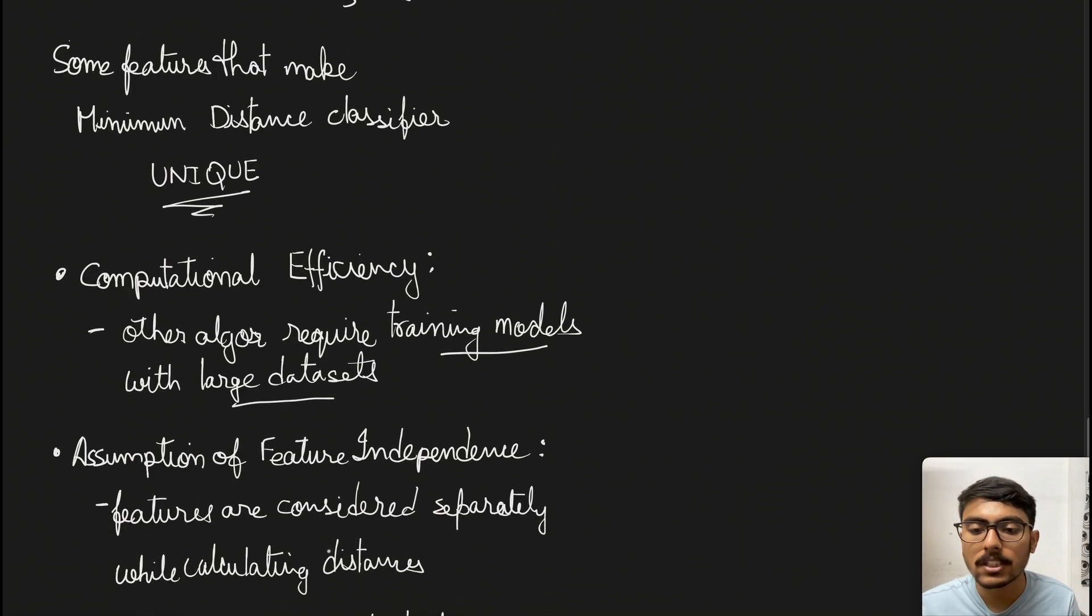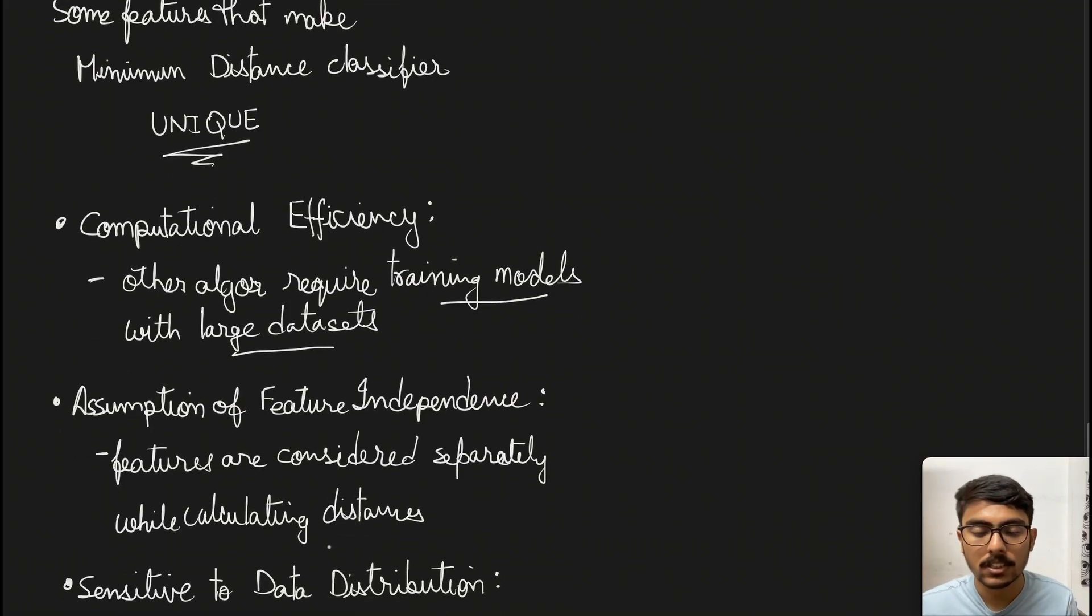Next is the assumption of feature independence. In minimum distance classifier, the features we consider are considered separately while calculating distances. If there are three different features like edges or angle count, we won't gather all this information into one and calculate distance. We'll have separate features and distances calculated separately, then classify based upon the distance.